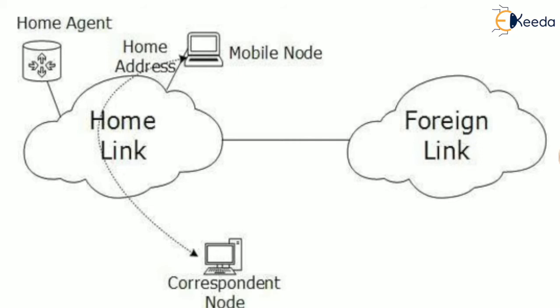In the diagram before you, you can see one mobile node which actually belongs to the home link. Home link and foreign link are nothing but the home network and foreign network. The home network has that mobile node and also has one home agent. There is also a foreign network — the other network where our mobile node will move — and this foreign network will have its own foreign agent. When our mobile node is present in the home network, it must have some address that belongs to the home network.